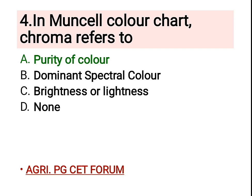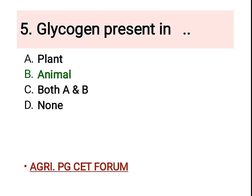Fourth question: in the Munsell color chart, chroma refers to — and the right option is A, which is the purity of the color. The Munsell color chart is based on three properties: hue, value (which means lightness), and chroma (which means color purity). It was created by Professor Albert H. Munsell in 1930.